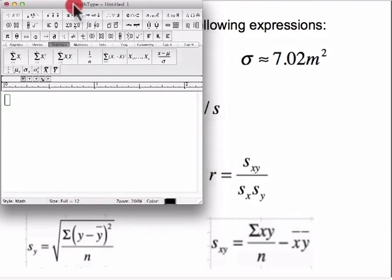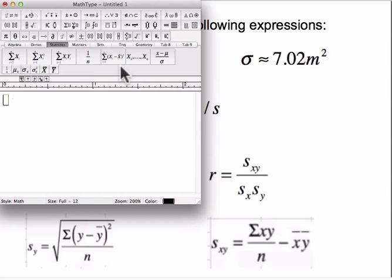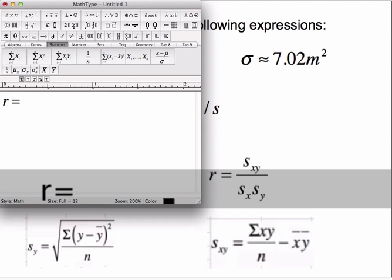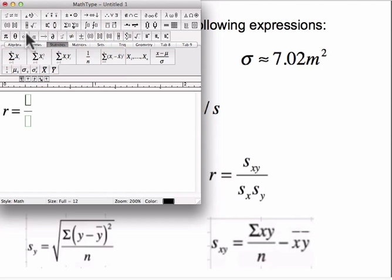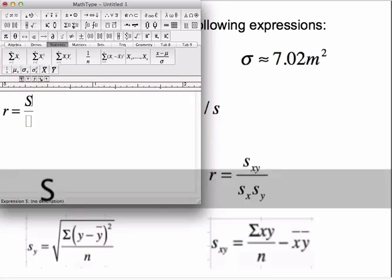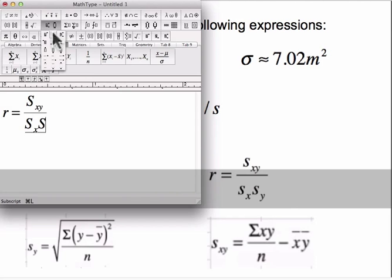Next, this correlation coefficient formula here. So R equals. And I'll make a fraction. And here you just need to do capital S and then the subscripts X, Y, and then click down arrow, capital S, subscript X, right arrow, capital S, subscript Y, and then we're done that one.